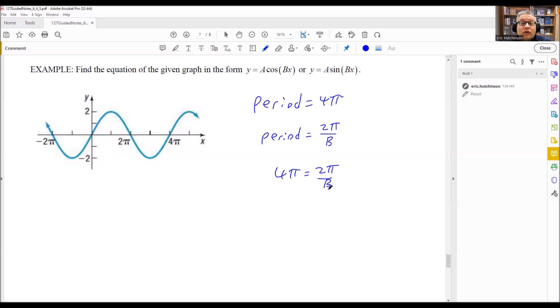Now we just need to solve for B. We do this by multiplying both sides by B, so we have 4πB is going to equal 2π. Then we need to divide both sides by 4π. When we do this, the π's are going to cancel, and we can reduce 2 over 4 to 1/2.